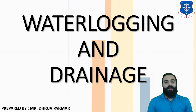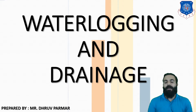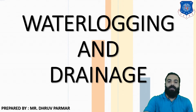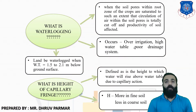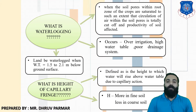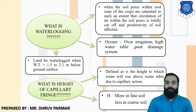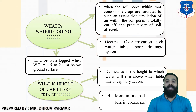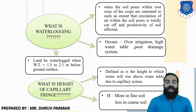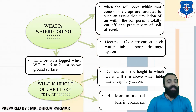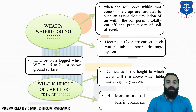The topic of waterlogging will be discussed in the first chapter under ill effects of irrigation. There are four types of ill effects, and one of them is waterlogging. When we supply water to a particular land or soil in excess, the soil pores and voids get filled with water, there is no air circulation between them, and the air and productivity of the soil are totally cut off. That condition is called waterlogging.